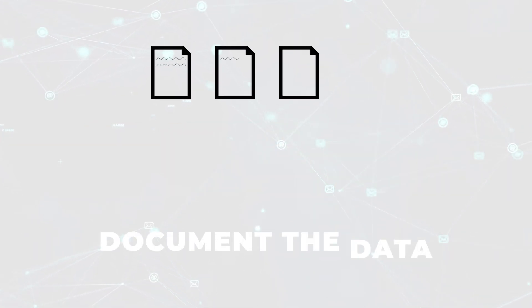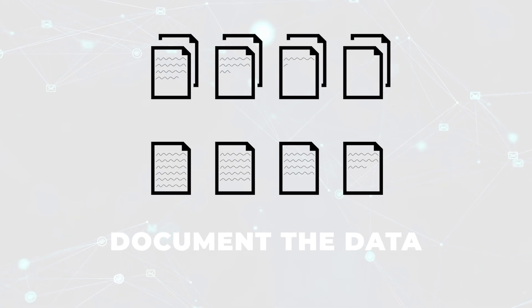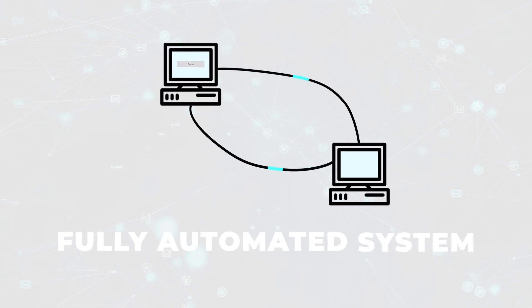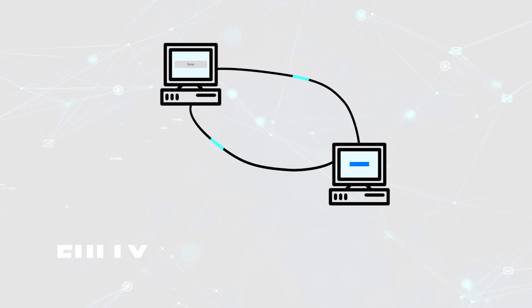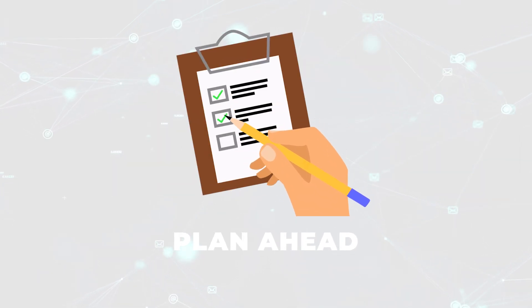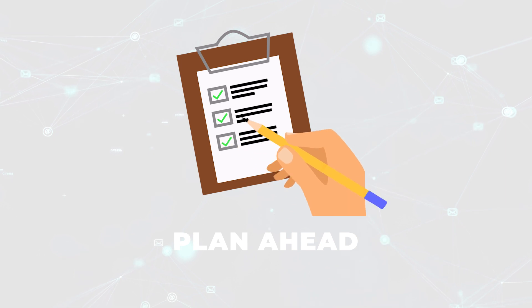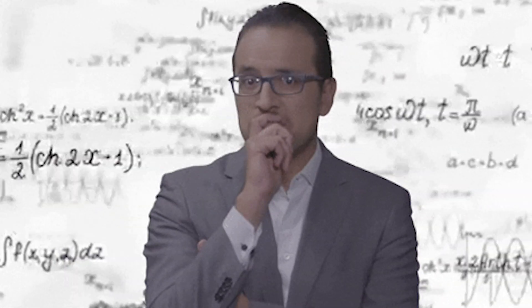Three: add troubleshooting guides for on-call engineers and document the data as much as possible. Four: take an iterative approach that starts manual but moves towards a fully automated system with CI/CD. And five: plan ahead for the many issues that come up when joining historical data to the latest values in real time — memory issues, data freshness issues, training-serving skew, data drift, and more.